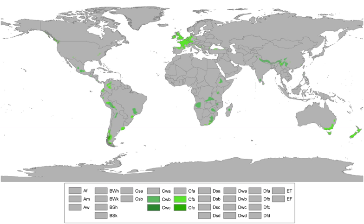At least one month's average temperature is below 18 degrees Celsius. Without their elevation, many of these regions would likely feature either tropical or humid subtropical climates. These regions are usually designated CWB.